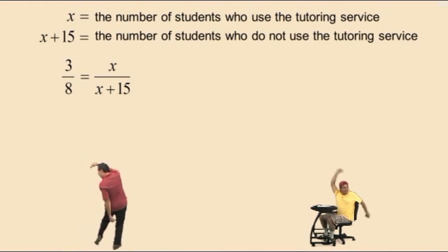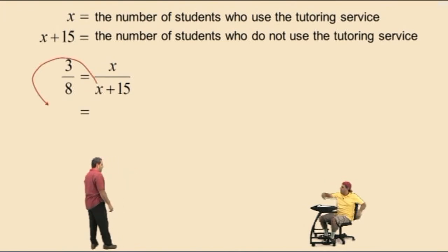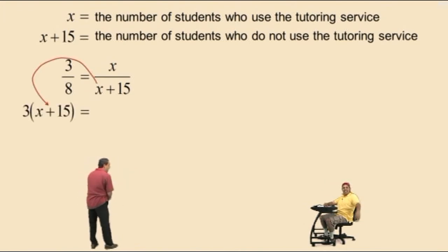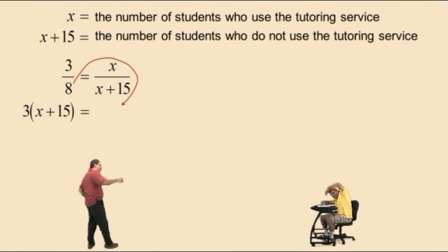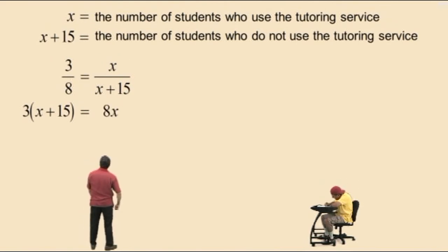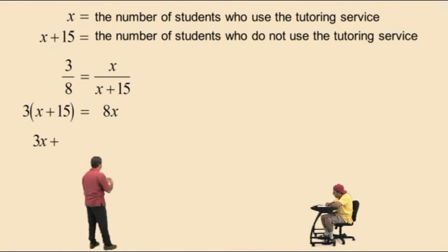Let's cross multiply this way and what did you get? 3 times x plus 15. Very nice there, Charlie. Now, let's go the other way and what did you get? 8x. Very nice there, Charlie. Now, on the left-hand side, let's distribute the 3 through so we get 3x plus 45 equals 8x.